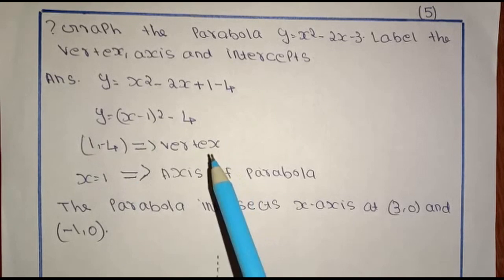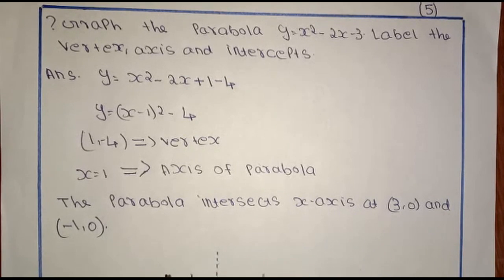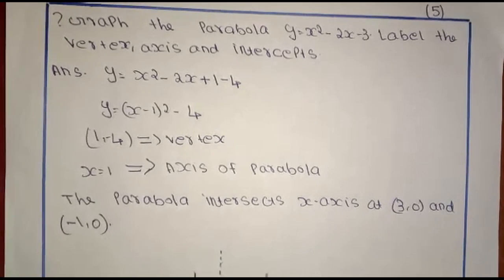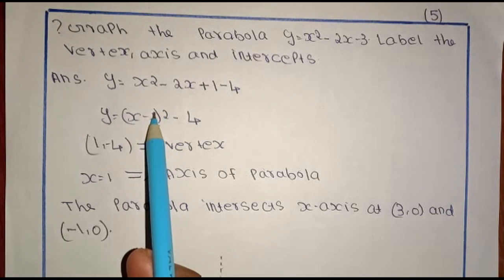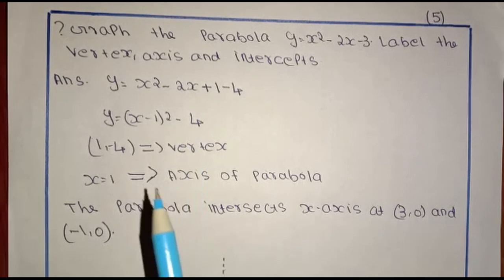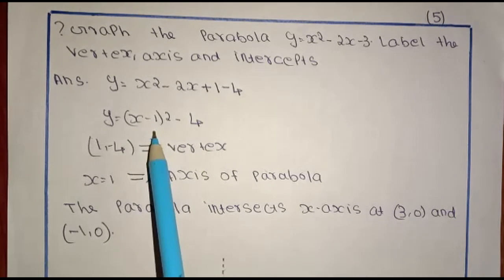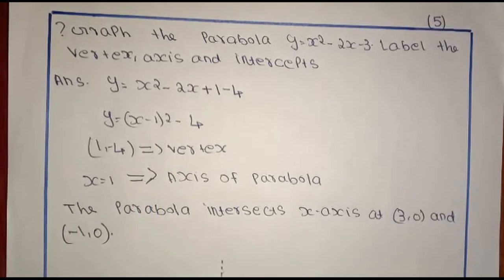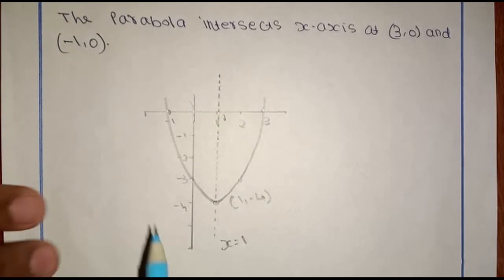The axis of symmetry is x equals 1. The parabola intersects the x-axis. The intercepts can be identified. The graph is y equals x minus 1 whole square minus 4, and we shift it in the right direction.